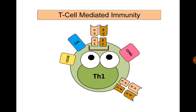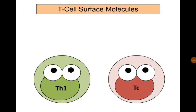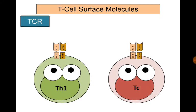Let's start with identifying the T-cell's surface molecules. This green cell is a T-helper lymphocyte and the pink one is a T-cytotoxic lymphocyte. The most important cell surface molecule is the T-cell receptor, which is responsible for identification and attachment to antigens. Each T-cell receptor is formed of an alpha chain and a beta chain, and each one has a constant part near the T-cell surface and a variable part.